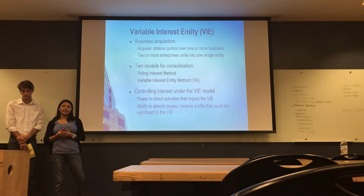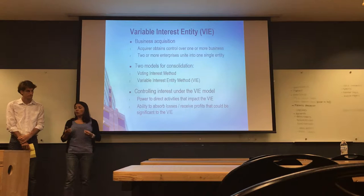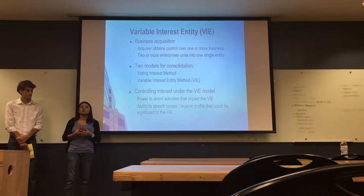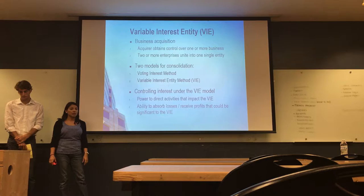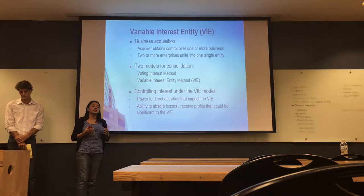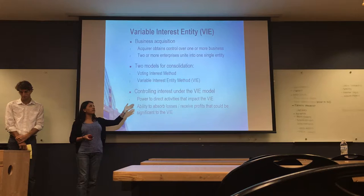So what is a variable interest entity? It's a business combination in which an acquirer obtains control over one or more businesses, and these two businesses come together to become one single economic entity. There are two models for consolidation: the voting interest method and the variable interest entity method. Under the voting interest method, consolidation is determined if the parent company owns more than 50% of the stock.